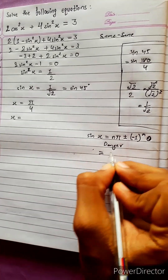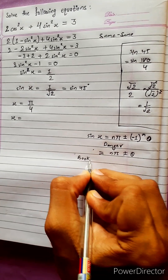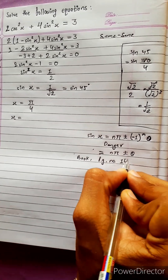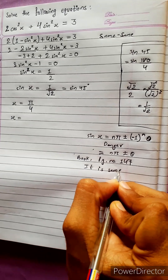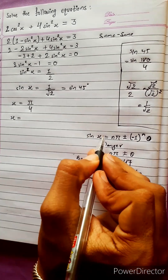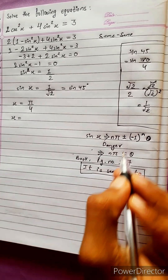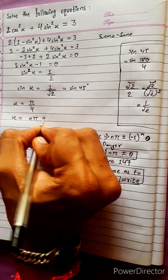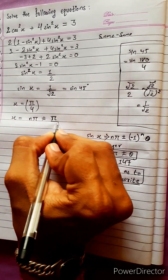Using the general formula for sin: x equals n pi plus or minus theta. This gives the general solution x equals n pi plus or minus pi by 4.